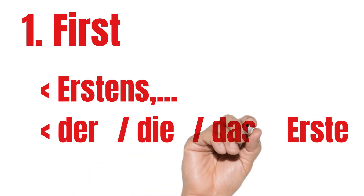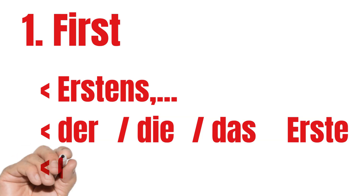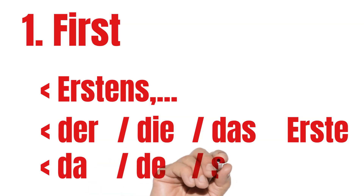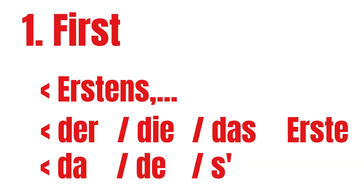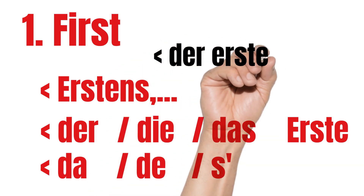In dialects of Austrian German you often hear: der Erste, die Erste, sie Erste. This goes especially for the spoken form. In written form we always stick to Standard German. If we use it with nouns we use small letters — for example, when it comes to months: the first of January is der erste Jänner.